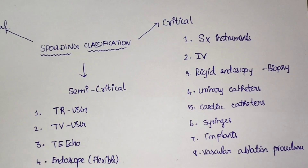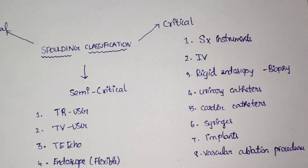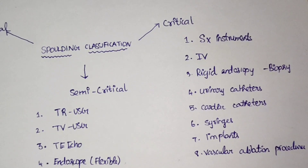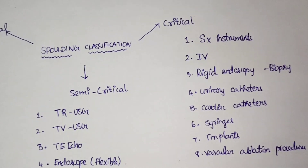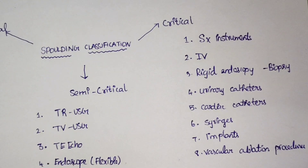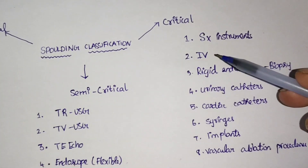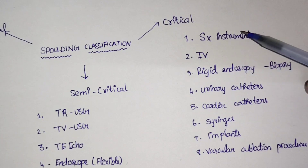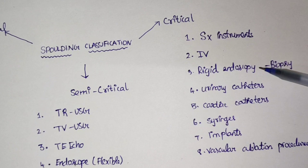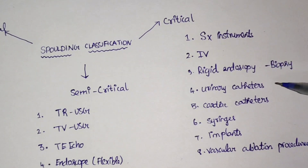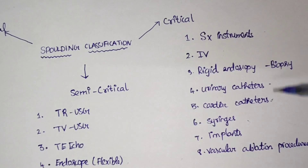Critical devices come in contact with broken skin, broken mucous membrane, enter the bloodstream, or enter a sterile body cavity. Examples include: surgical instruments; IV access — both peripheral IV and central line; rigid endoscopy, since biopsy is taken or it contacts blood cavities; urinary catheter and cardiac catheter; syringes and injections; any implants; and any vascular ablation procedures.